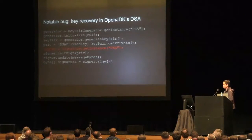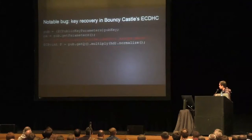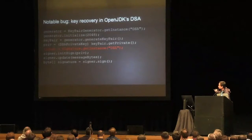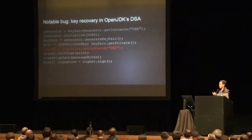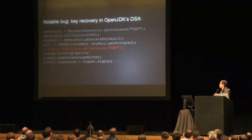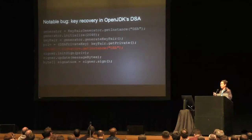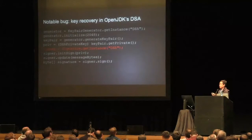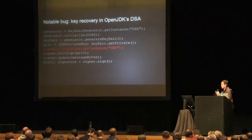I think this bug was fixed in April last year. The problem is the DSA implementation actually allows — if you look at the red line — the sign object to be used with a private key of 2048 bits. The problem is if you initialize the signature object like this, OpenJDK will always generate the nonce using only 160 bits. That means the nonce is heavily biased, and you can easily recover the private key using lattice techniques just by observing two to three to five signatures. This is a critical problem because DSA is still used in many, many places.